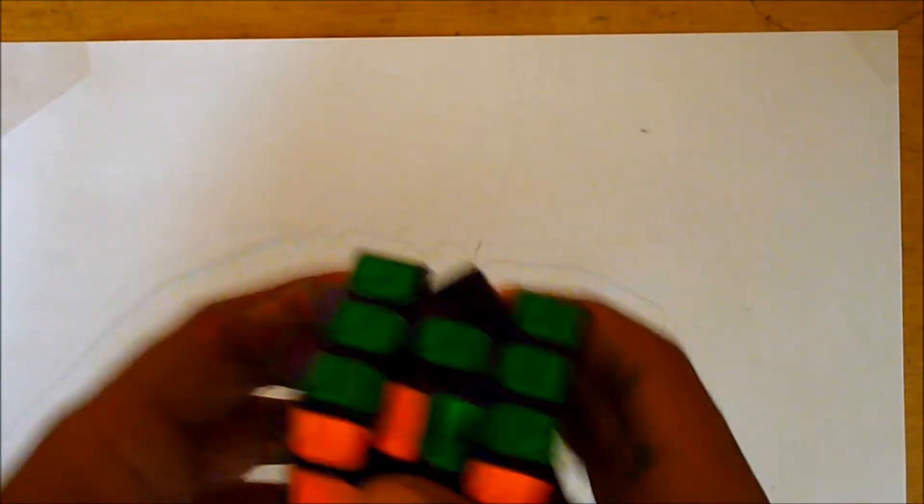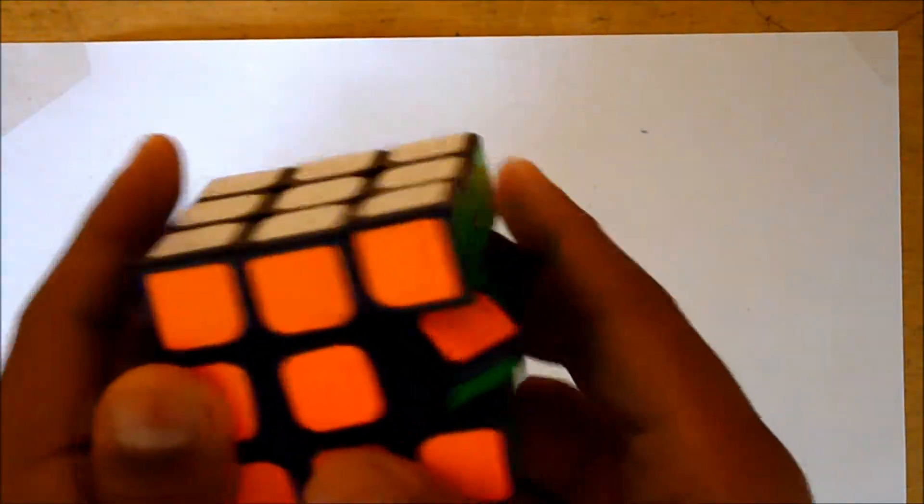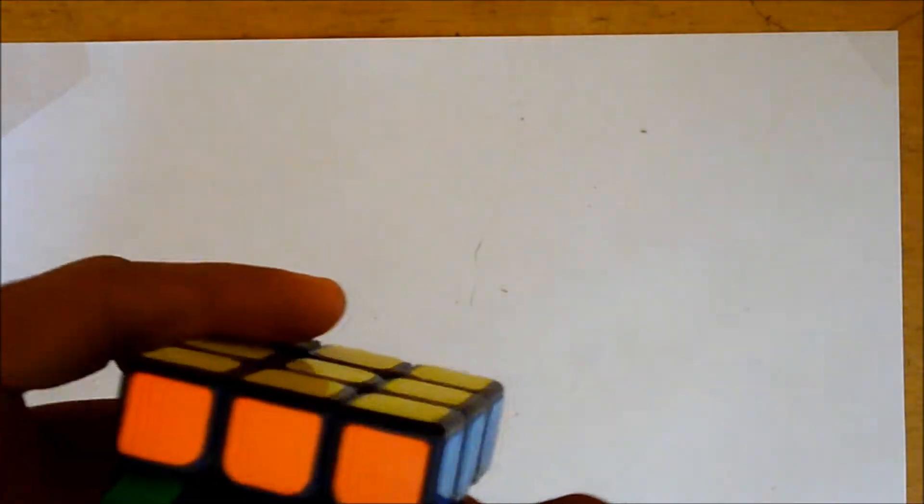So as you can see, it looks just like a regular 3x3 and even turns like one. So what's the difference then?